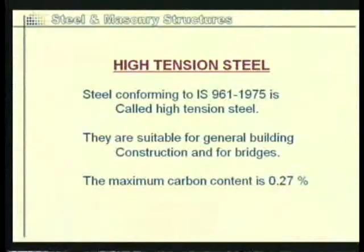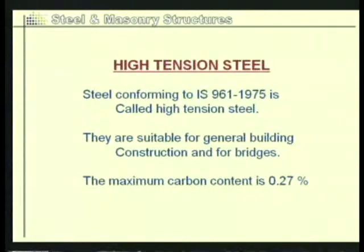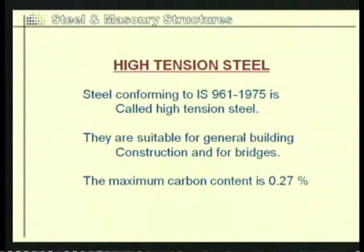Coming to high tensile steel: as we increase the carbon content, the strength of the steel increases. So naturally, high tensile steel will have more carbon content compared to mild steel. The steel which corresponds to IS 961, 1975 is called high tensile steel. It has enhanced mechanical properties and better corrosion resistance due to the increase in alloying materials. It is generally used for building construction works as well as bridges, with maximum carbon content limited to 0.27 percent.